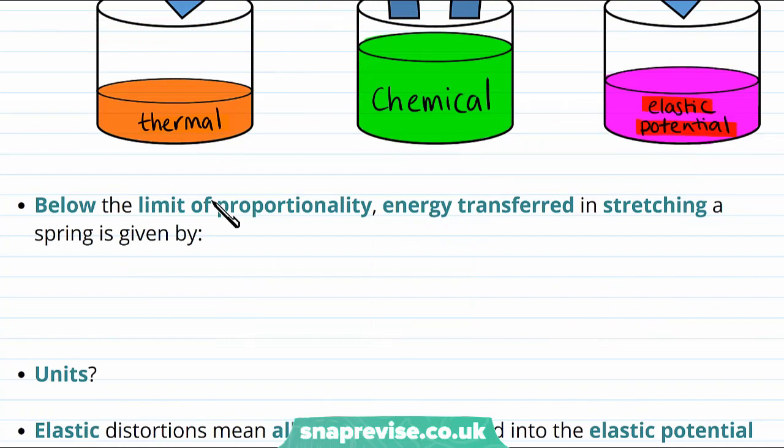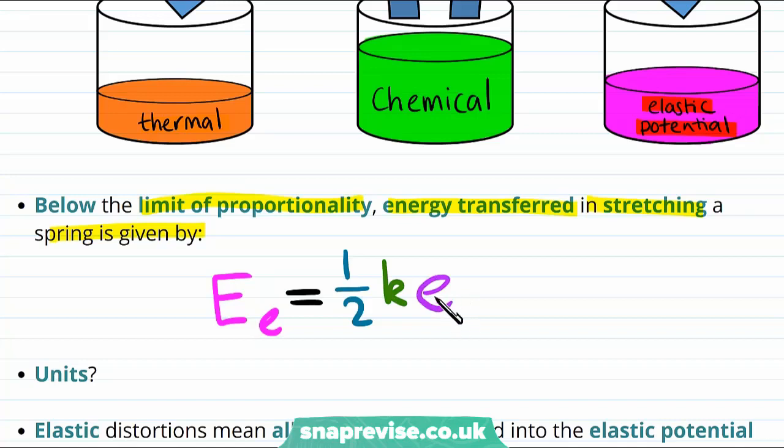Now, below the limit of proportionality, and remember the limit of proportionality was the point where the force stops being proportional to the extension. Below this limit, energy transferred in stretching a spring is given by a formula. The elastic potential energy is equal to one half multiplied by the spring constant and multiplied by the extension squared.